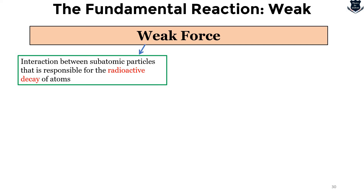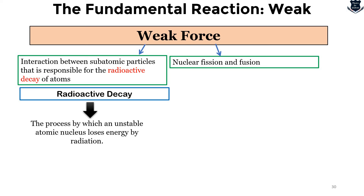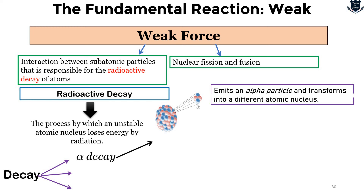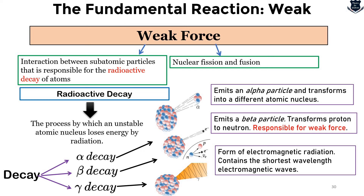The weak force involves interactions between subatomic particles responsible for radioactive decay — weak force causes decay, while strong force holds and unites the elements within the atom. Weak force is remembered for nuclear fusion and fission. Radioactive decay — the process by which an unstable atom loses energy — includes alpha decay, which emits alpha particles and transforms the nucleus; beta decay, which emits a beta particle and transforms a proton to a neutron (responsible for weak force); and gamma decay, which forms electromagnetic radiation with the shortest wavelength.